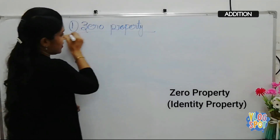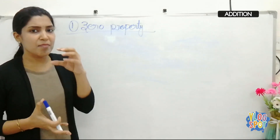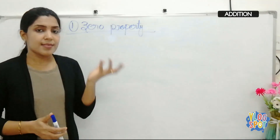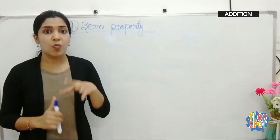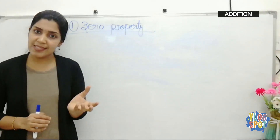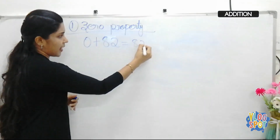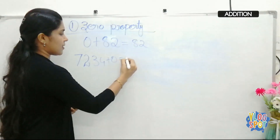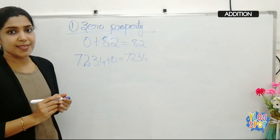Zero property of addition: if you add any number with 0, the result is that number itself. For example, 0 plus 0 is 0; 0 plus 10 is 10; 0 plus 1000 is 1000; 0 plus 150 is 150. So 0 plus 82 is 82, and 7,234 plus 0 is 7,234. Whatever number you add with 0, the result is that number itself.